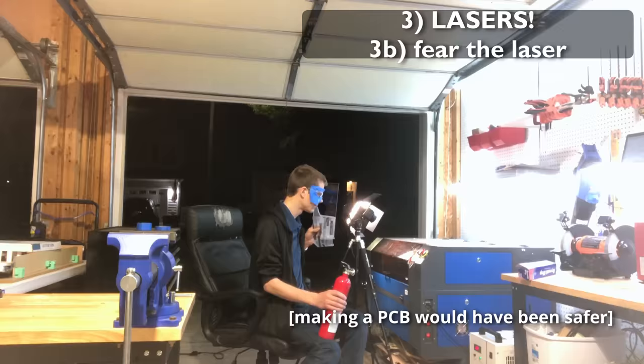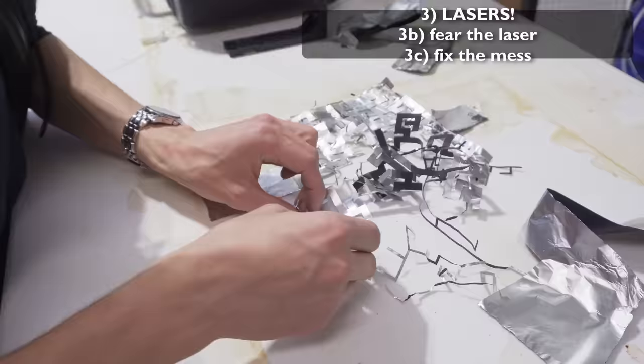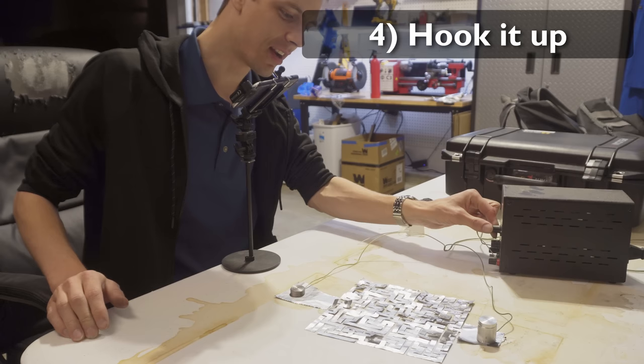Step three B, have great fear and respect for reflective metal in a laser cutter. Step three C, untangle the resulting foil.